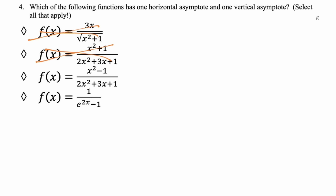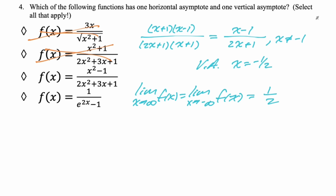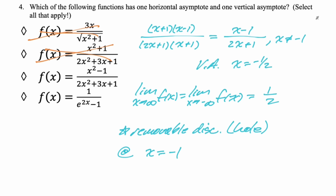Checking the third function: factor everything and you can cancel the (x + 1) factors. We get (x - 1)/(2x + 1) when x ≠ -1, so there is only one vertical asymptote at x = -1/2. It's a rational function, so it has a horizontal asymptote, and both directions give 1/2 — only one horizontal asymptote. This is our answer. Note: there's a removable discontinuity at x = -1, but that wasn't part of the problem.